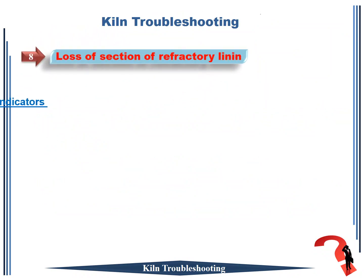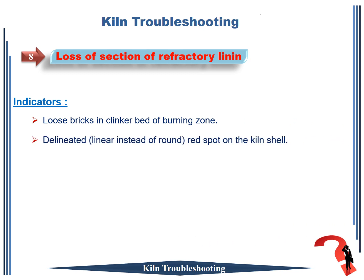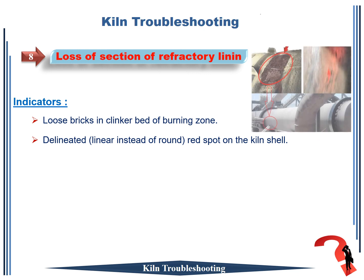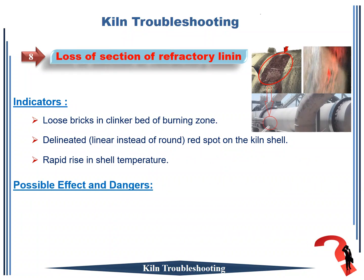The important indicators from this case: 1. loose bricks in clinker bed of burning zone; 2. delineated linear instead of round red spot on the kiln shell; 3. rapid rise in shell temperature. Possible effects and dangers that occur in this case.